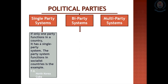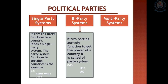The second is the biparty system. If two parties actively function to gain the power of the country, it is called a biparty system. Many other political parties may exist in these countries but are not powerful enough to gain power. Only two major parties function to win power. Examples include the United States of America and the United Kingdom.